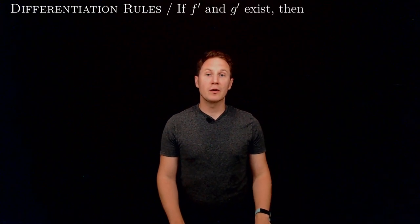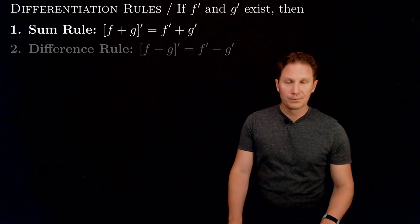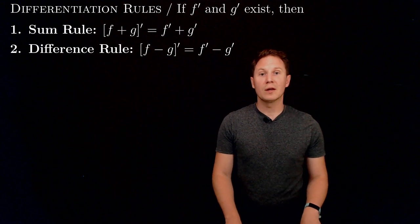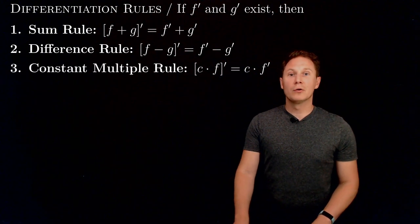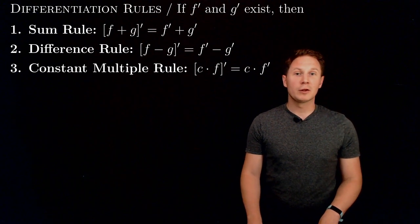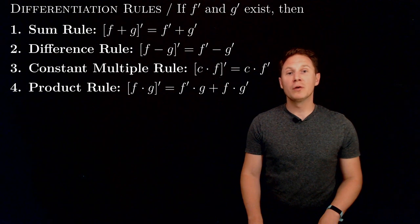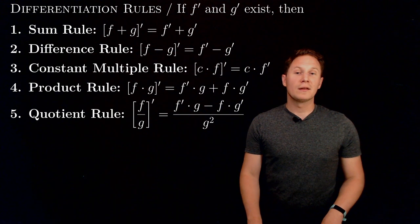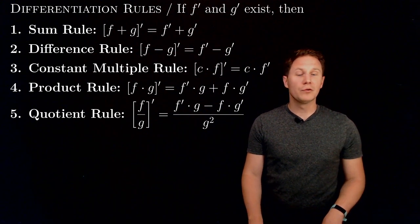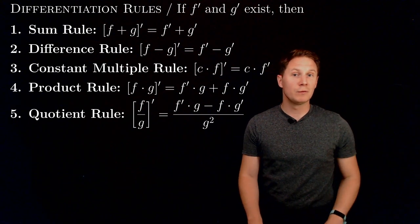These rules tell us how differentiation works with the basic arithmetic operations. If we have two functions f and g whose derivatives f prime and g prime exist, then: the sum rule says the derivative of their sum is the sum of their derivatives; the difference rule says the derivative of their difference is the difference of their derivatives; the constant multiple rule says the derivative of any constant multiple of f is that constant times the derivative of f; the product rule says the derivative of f times g is f prime times g plus f times g prime; and the quotient rule says the derivative of f over g equals f prime times g minus f times g prime, all divided by g squared — where we must not divide by zero.